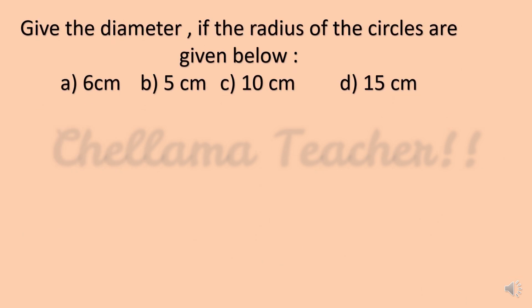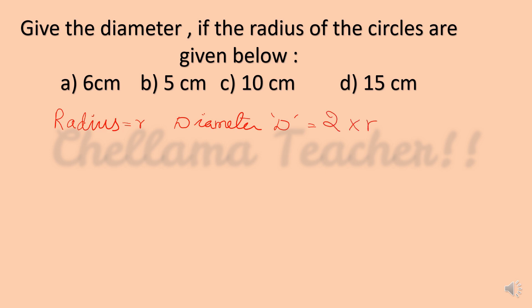Give the diameter if the radius of the circles are given below: A = 6 cm, B = 5 cm, C = 10 cm, and D = 15 cm. We know the formula: diameter D = 2 × R. From this we can calculate and find the diameter for each given radius.